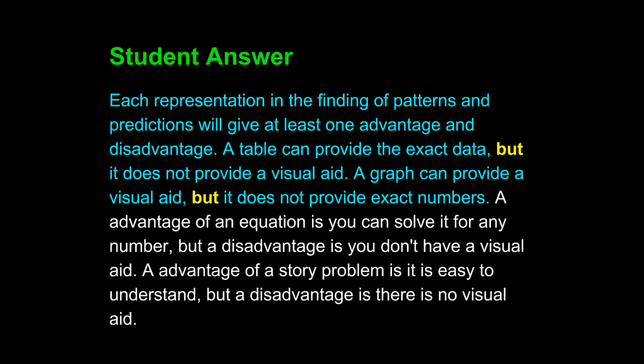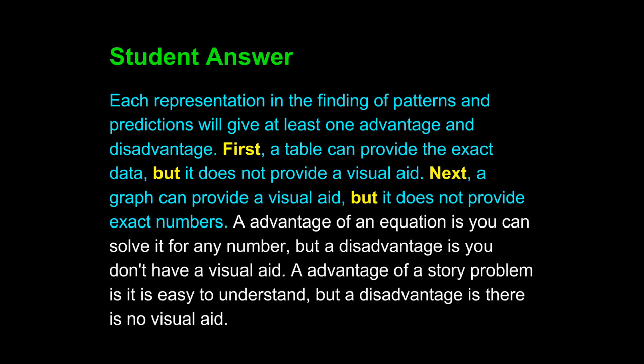The word 'but' is where we already see some transition language — this shows contrast and clearly indicates the difference between advantage and disadvantage in each sentence. If we add words like 'first' and 'next,' we can further clarify. First, a table can provide the exact data, but it does not provide a visual aid. Next, a graph can provide a visual aid, but it does not provide exact numbers. These transition words clearly indicate the difference from one concept to the next.